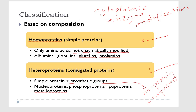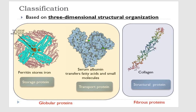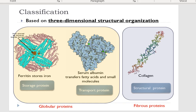Proteins can also be classified according to their three-dimensional structural organization — here we are talking about shape. We have two types: globular proteins or fibrous proteins. Globular proteins are those that exist in spherical or ellipsoidal shapes, resulting from folding of the polypeptide chain on itself, so they are folded proteins.